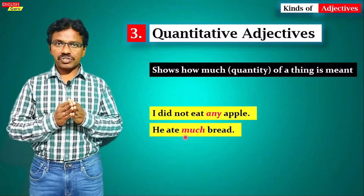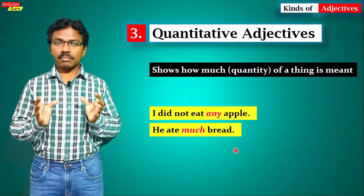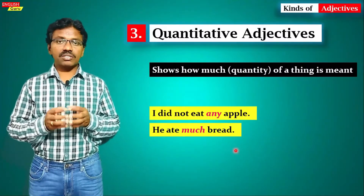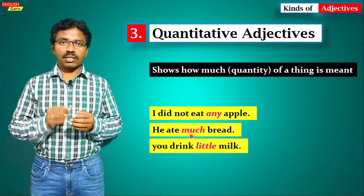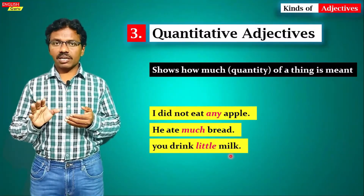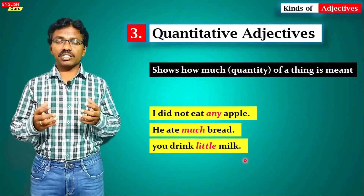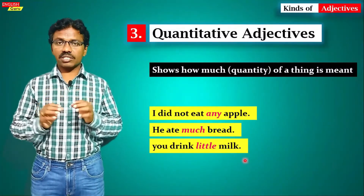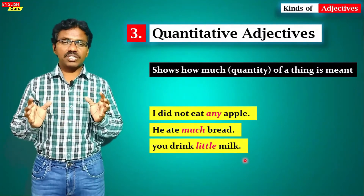Another example: 'He ate much bread' — here 'much' is talking about the quantity, so it is a quantitative adjective. Similarly, 'You drink little milk' — 'milk' is a noun and 'little' describes its quantity, making it a quantitative adjective. So quantitative adjectives talk about quantity.